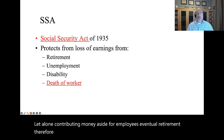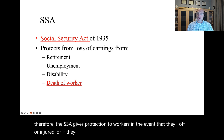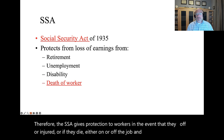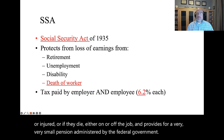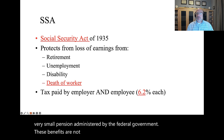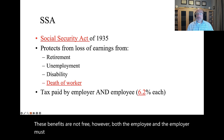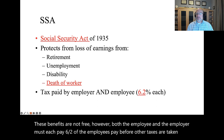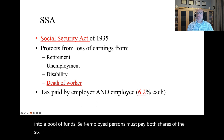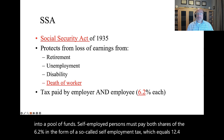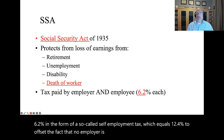Nor did companies pay the surviving members of an employee's family in case of the employee's death on the job, let alone contributing money aside for the employee's eventual retirement. Therefore, the SSA gives protection to workers in the event that they get laid off or injured or if they die, either on or off the job, and provides for a very small pension administered by the federal government. These benefits are not free, however. Both the employee and the employer must each pay 6.2% of the employee's pay before other taxes are taken out into a pool of funds.